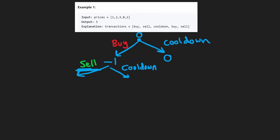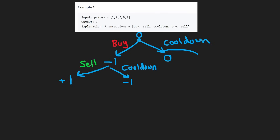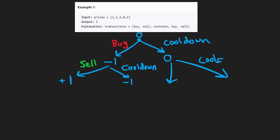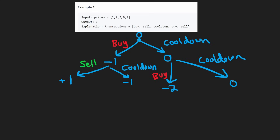If we sell on the second day, the price is two. We add two to our running profit of negative one, giving us positive one. If we instead cooldown, the profit stays at negative one. On the right side of the tree, if we cooled down and then buy on the second day, that's a minus two operation, giving a total profit of minus two. If we cooldown again, it stays zero.